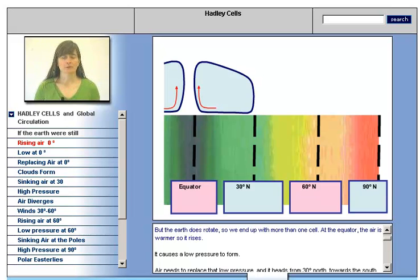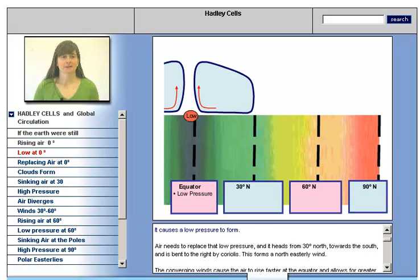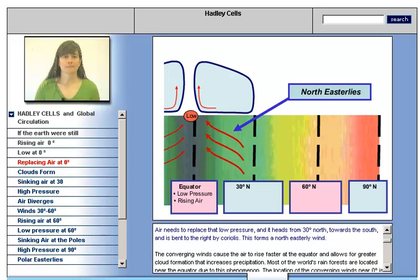At the equator, the air is warmer, so it rises, causing a low pressure to form. Air needs to replace that low pressure, and it heads from 30 degrees north towards the south and is bent to the right by Coriolis. This forms a northeasterly wind.